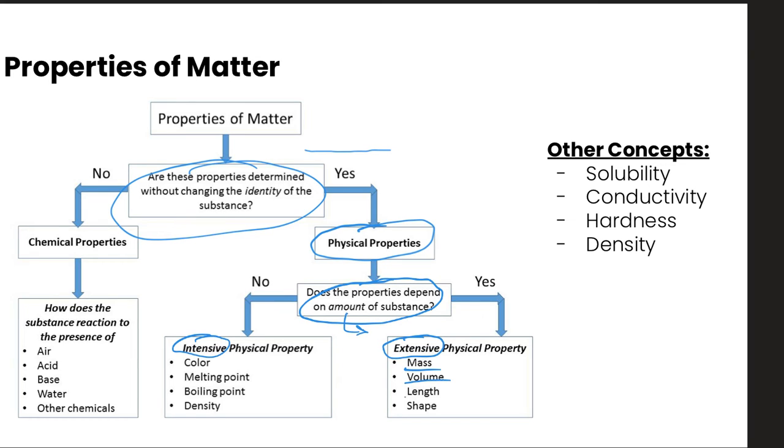things like mass, volume, length, and shape all depend on how much of the matter that we have. And so those are considered to be extensive.